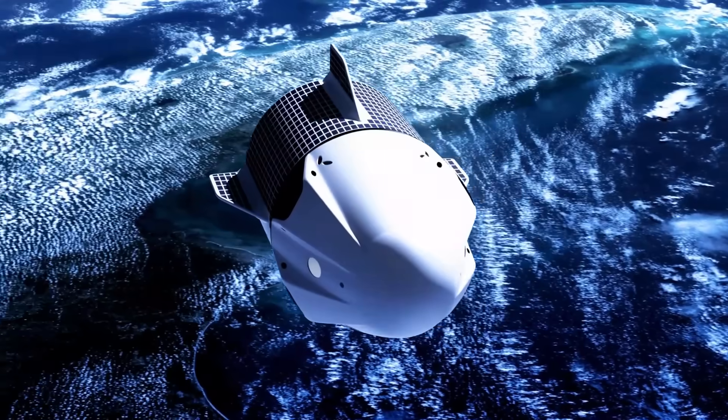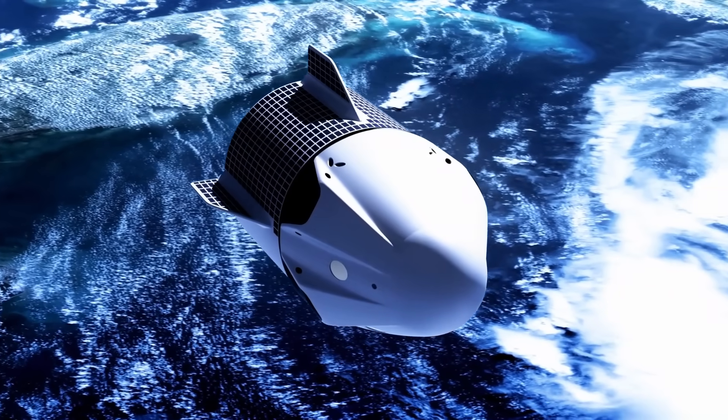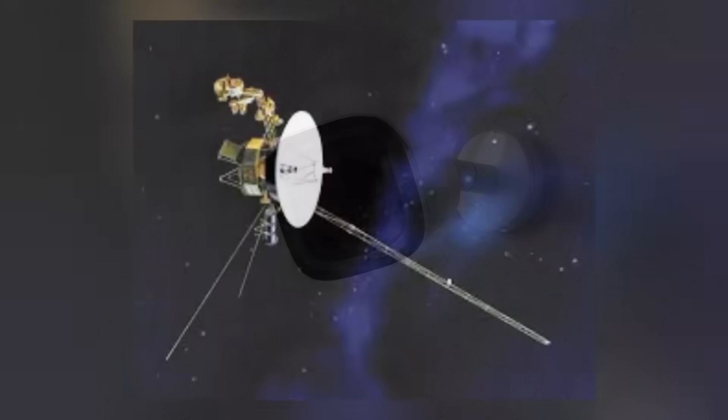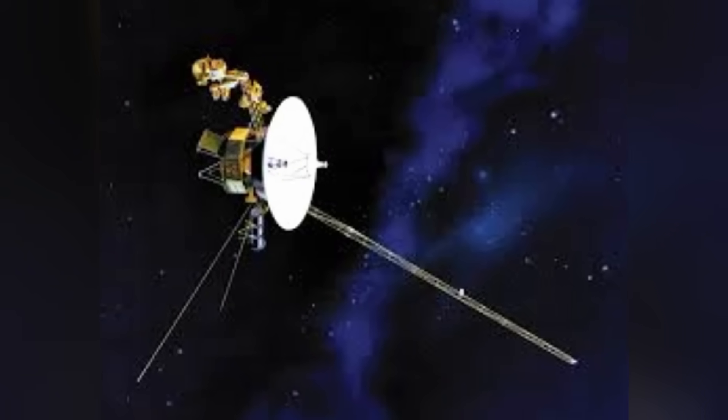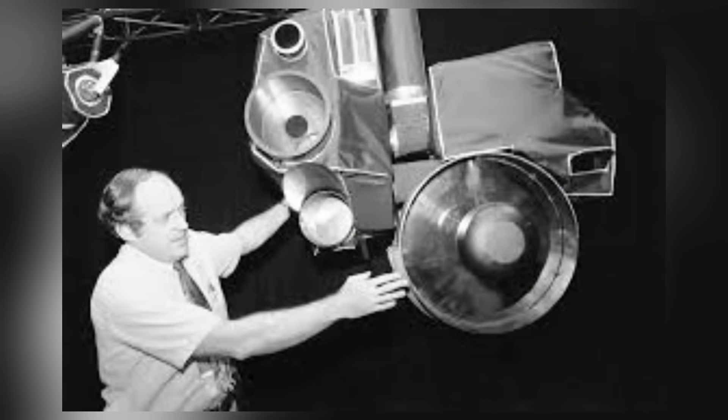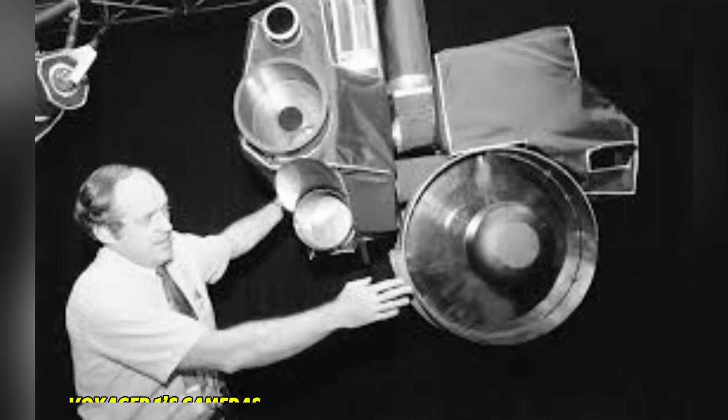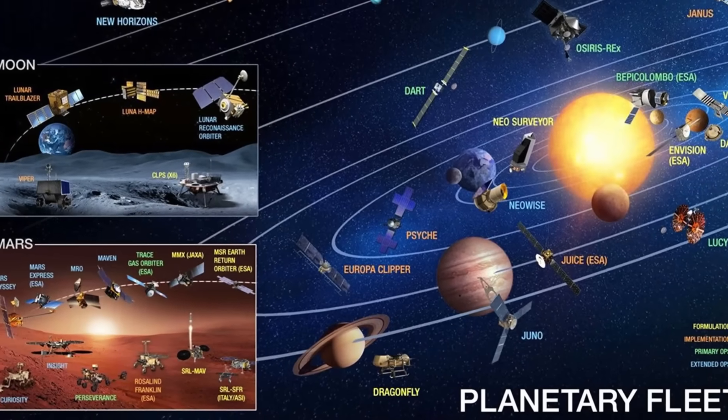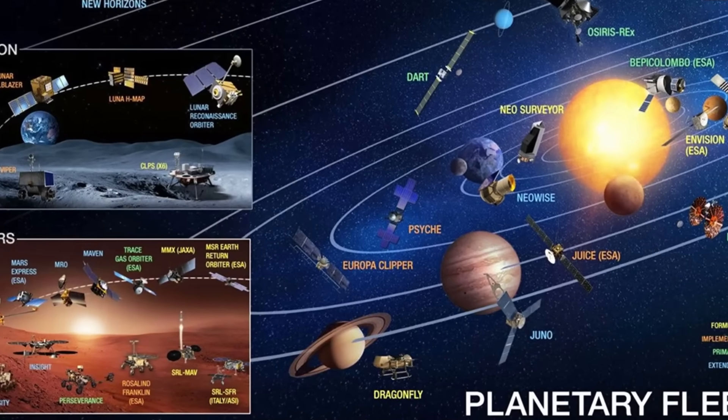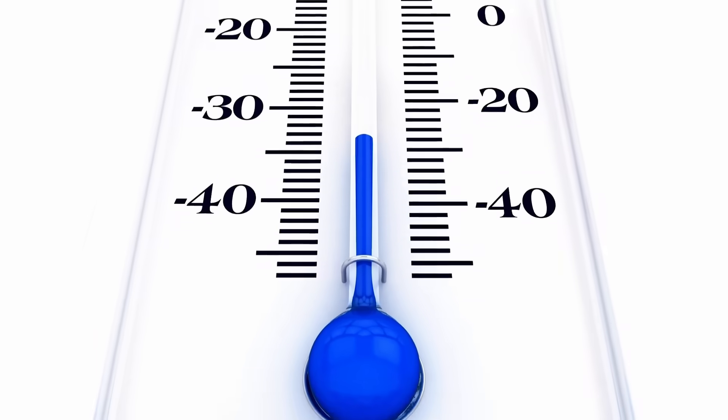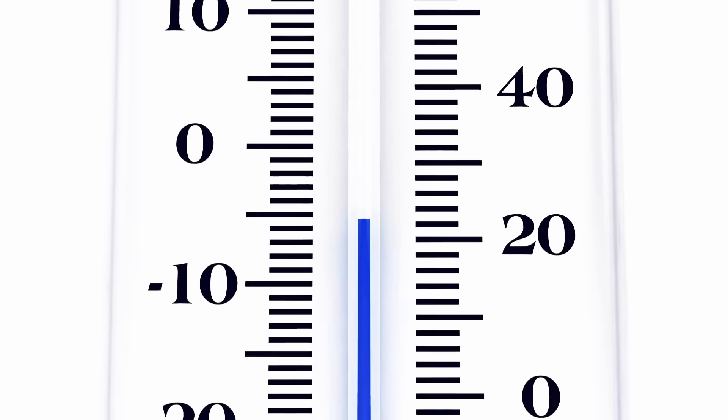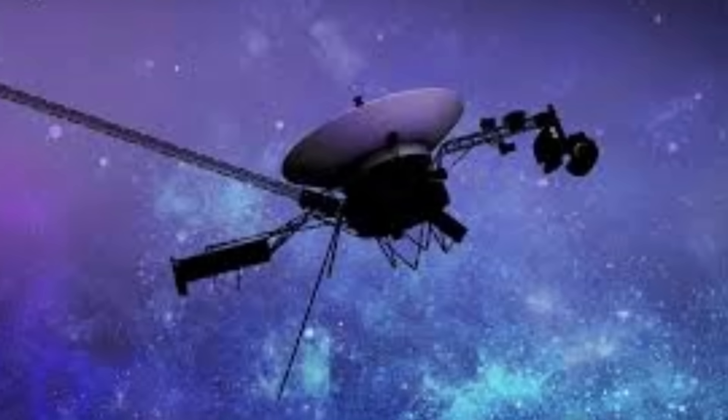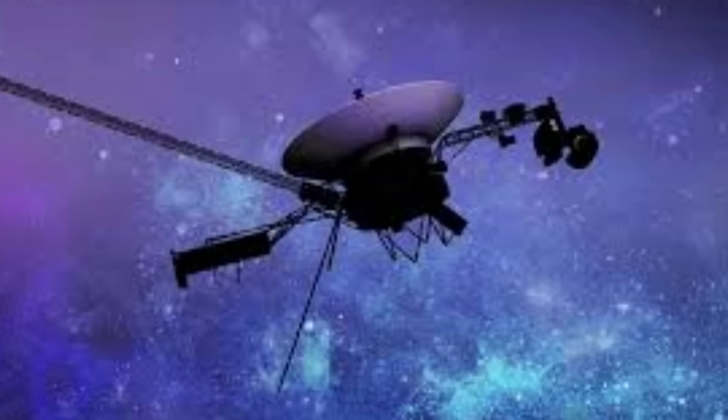Both Voyager spacecraft are equipped with the same set of instruments, including cameras, magnetometers, and plasma detectors. However, over time, the way these instruments operate has evolved. To conserve energy for other instruments, Voyager 1's cameras were turned off after completing its planetary mission, preventing it from capturing images during its interstellar journey. Since Voyager 1 could not directly measure the density and temperature of interstellar plasma, Voyager 2 provided crucial data with its operational plasma instrument during its heliopause crossing.